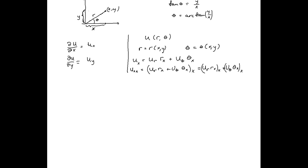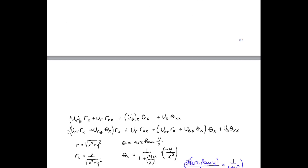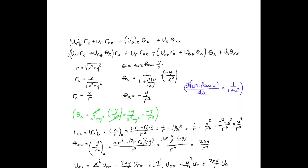Using the chain rule once more, we end up with an expression for the second derivative of u with respect to x. We now recall the relation between r and x and y, and the relation between theta and x and y. From these, we get the derivative of r with respect to x and the derivative of theta with respect to x.